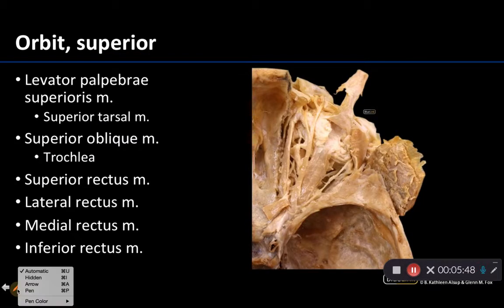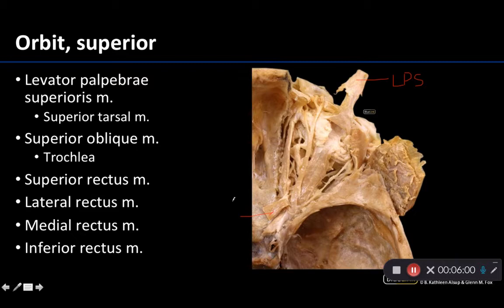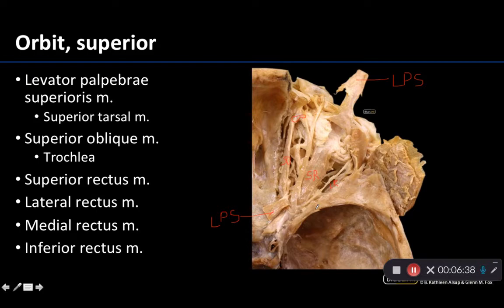Now we have reflected a muscle — the levator palpebrae superioris. You can see that these reflected portions are both the levator palpebrae superioris. At this point you have a really nice view of the superior rectus right here. We have not reflected the superior oblique — we still know we're looking at it because I can still see that clear trochlea. In order to see the superior rectus in its entirety you really have to reflect the levator palpebrae superioris.